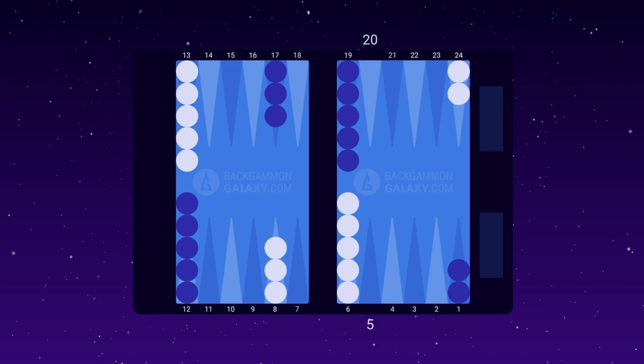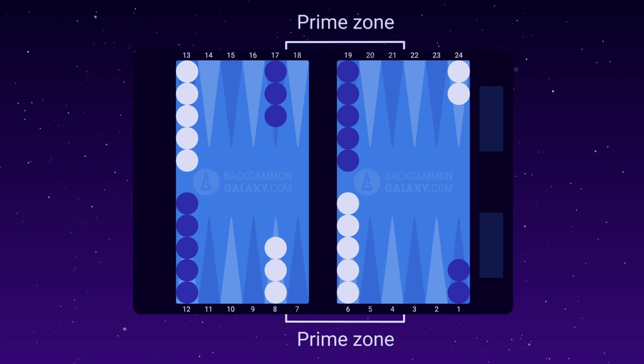In the opening game, you must fight for the key points. The key points are the points that make up the prime zones on both sides of the board.